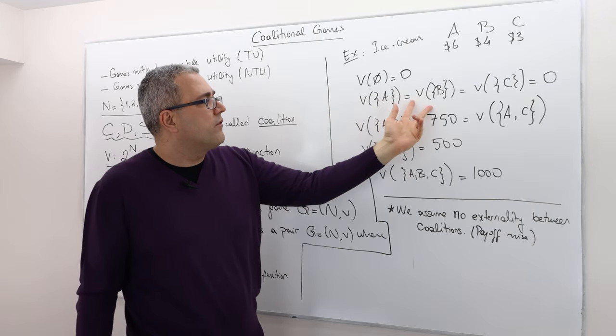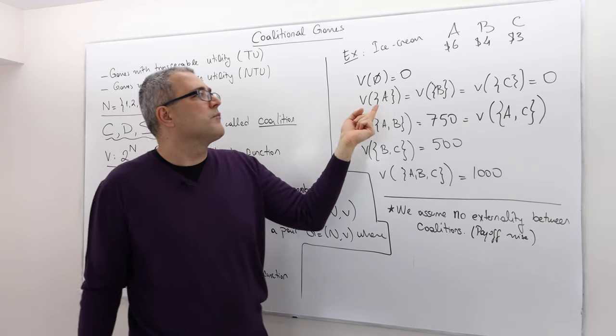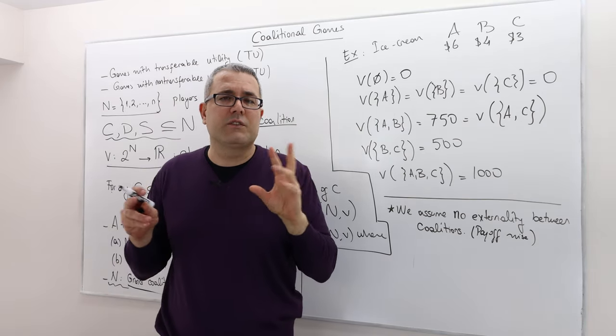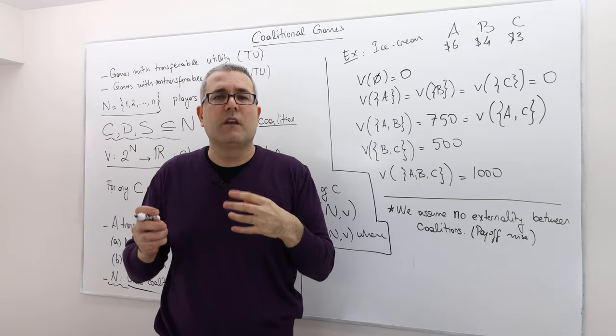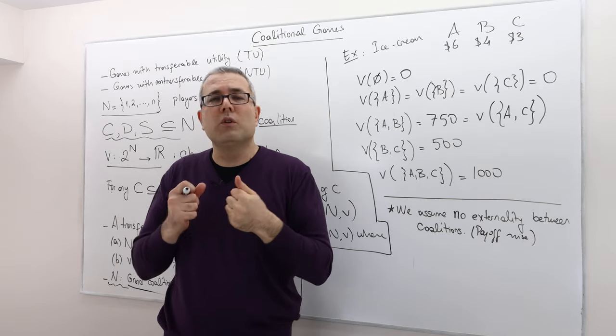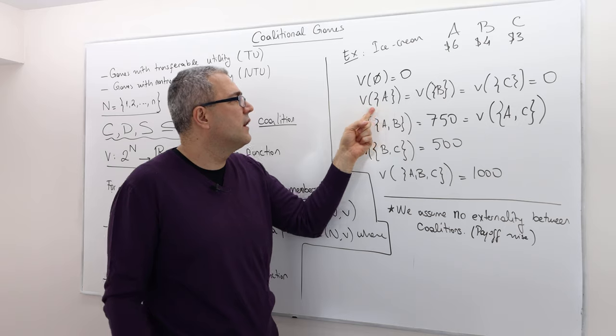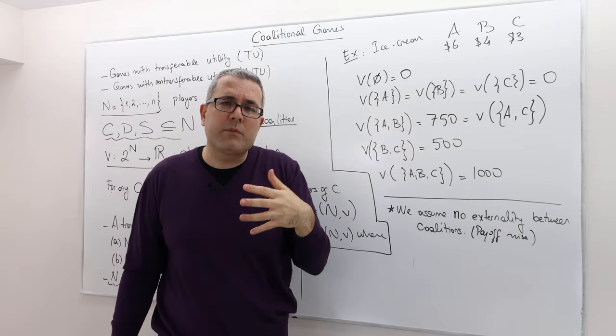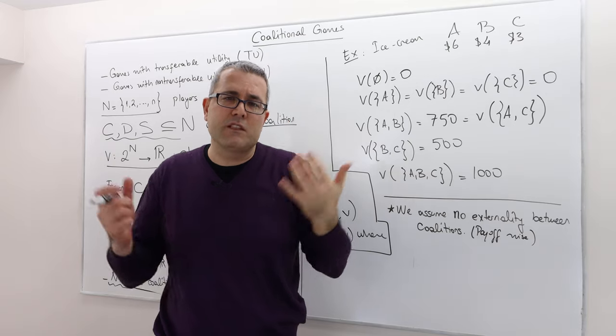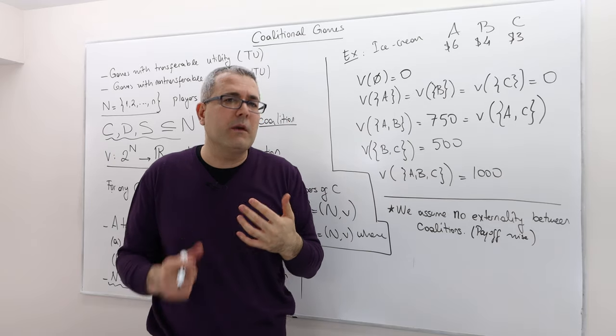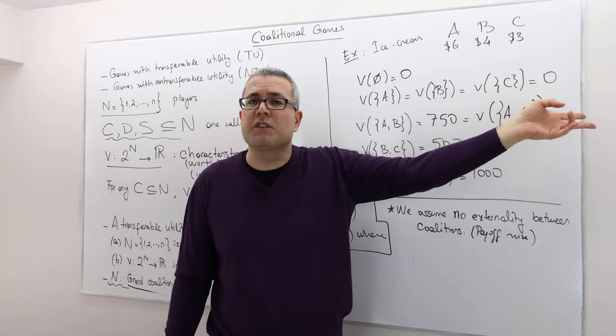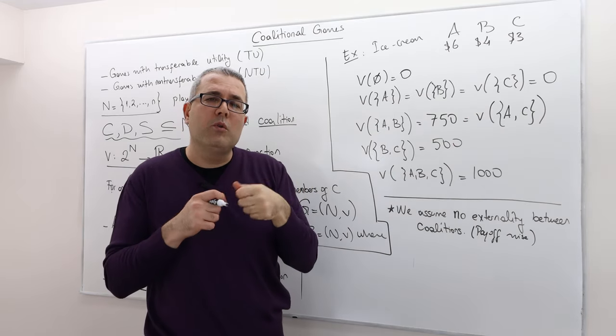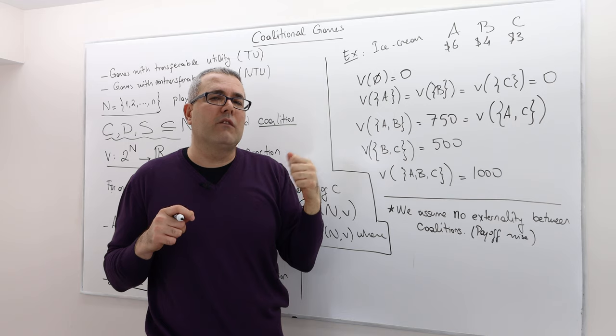So in this game, v of A, v of B and v of C, meaning if player A is the only person, so he doesn't coordinate or pool his money with anybody else, so this is A alone, B alone, C alone. Remember they don't have enough money to buy even the smallest tub of ice cream and so they each receive zero ice cream.